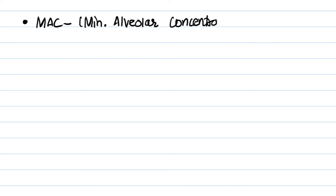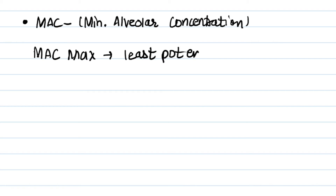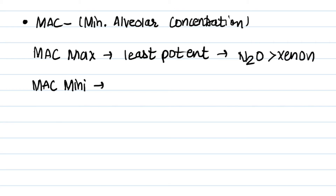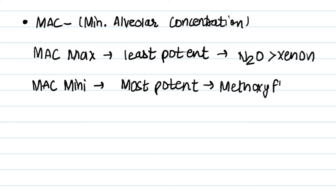Next is MAC — MAC means minimum alveolar concentration. It is the minimum concentration required in the alveoli to produce anesthesia. If the MAC is minimum, then the agent is most potent. The agent with lowest MAC is methoxyflurane, and highest MAC is nitrous oxide, then xenon.